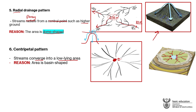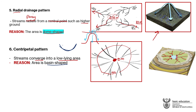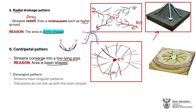In the centripetal pattern, the streams move from higher heights to a lower height — for example, from a contour line of 50 meters converging towards a spot height of 10 meters. Water always moves from higher ground to lower ground. This lower-lying central point might be a lake or dam. The reason for the centripetal pattern is that the area is basin-shaped, like a basin when viewed from the side.